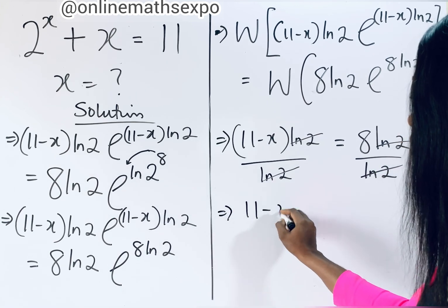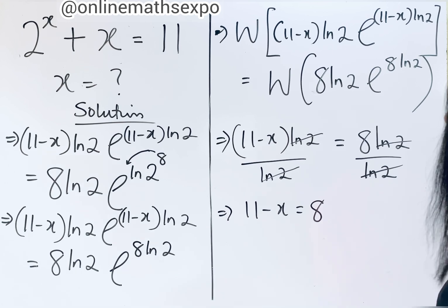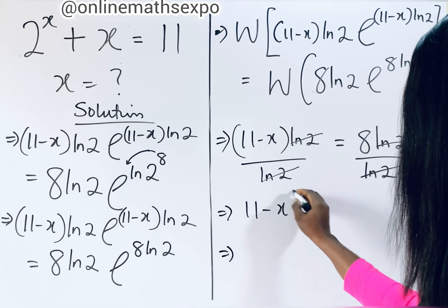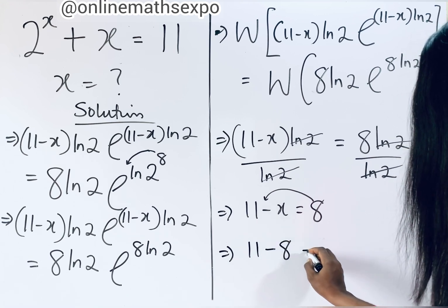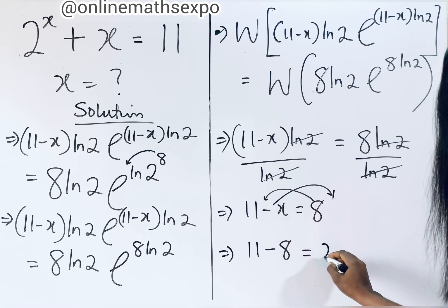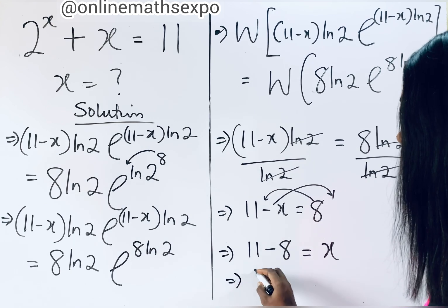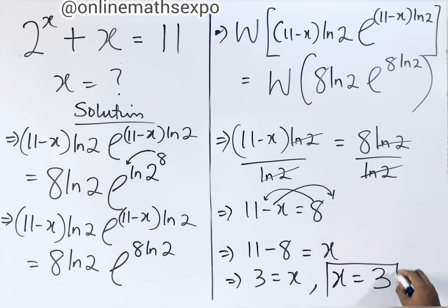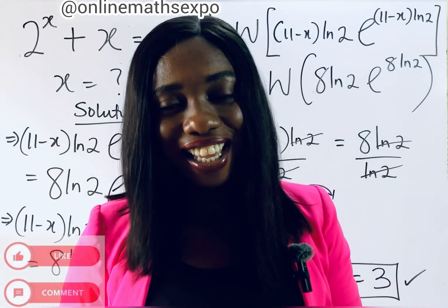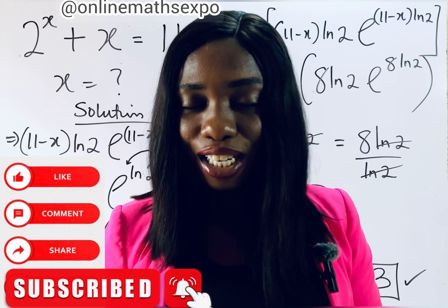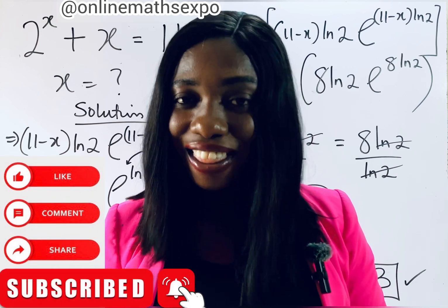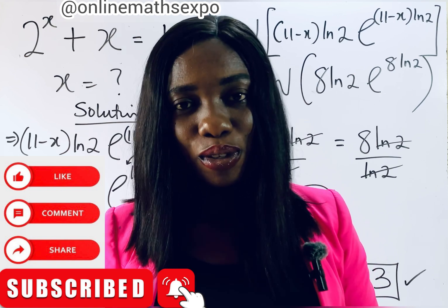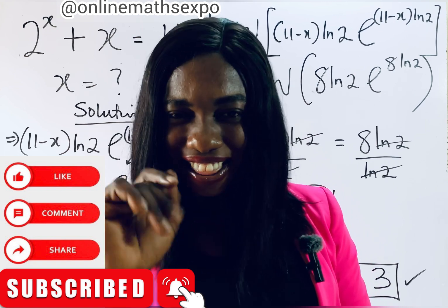So 11 minus 8 gives us x equals 3. That is exactly what we said at the beginning of this tutorial — the value of x is 3. I hope you really learned something today. Don't forget to subscribe for more tips, click on the notification button for updates, give this tutorial a thumbs up, and share with your friends. See you in the next class!